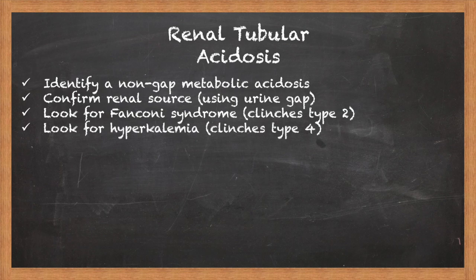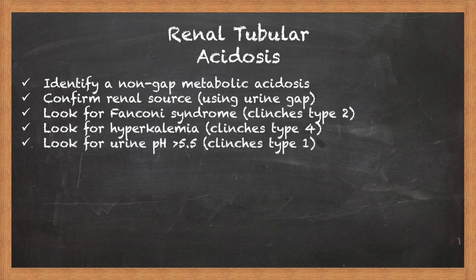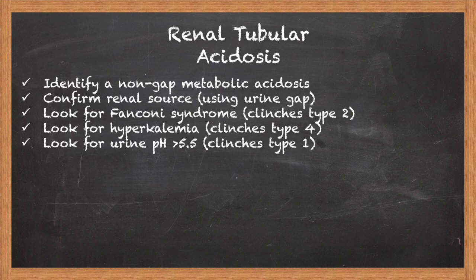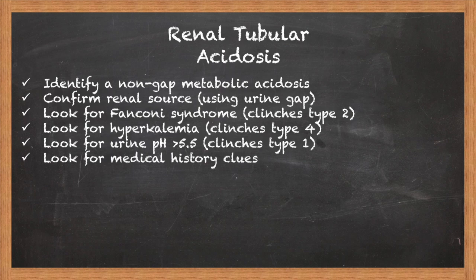The next thing to look for is hyperkalemia. If you have evidence of an RTA but you have hyperkalemia, this almost always clinches a diagnosis of type 4 RTA. If you still don't have a convincing diagnosis, look at the urine pH. If it's high — meaning greater than 5.5 — this pretty much clinches a type 1 RTA. Note that in clinical practice one can see urine pH less than 5.5 in a type 1 RTA, but you can differentiate this by the urine bicarbonate response to administering exogenous bicarbonate — though that's more complicated than board exams, especially for a non-nephrology board exam. And last, if the RTA is not clear by any of these steps, look at the medical history for the classic associations and medications that we've already discussed.